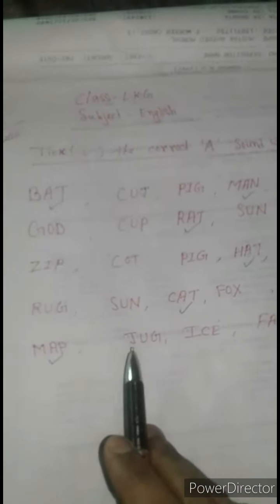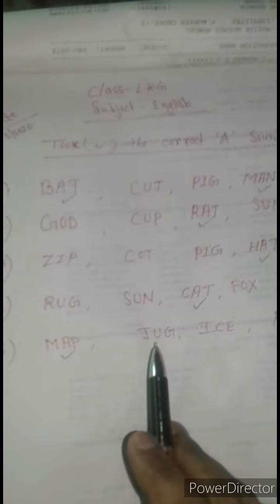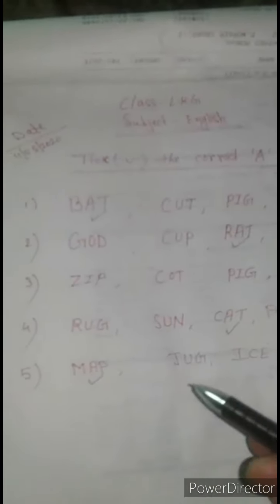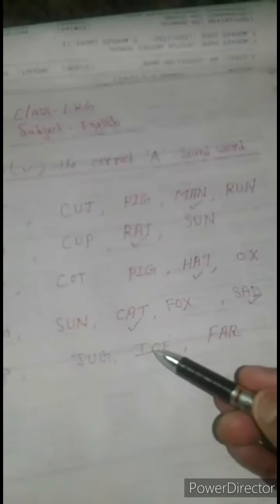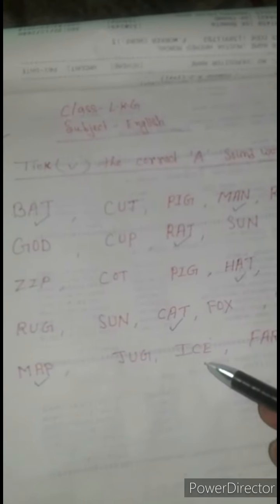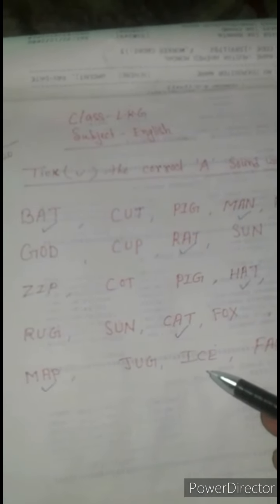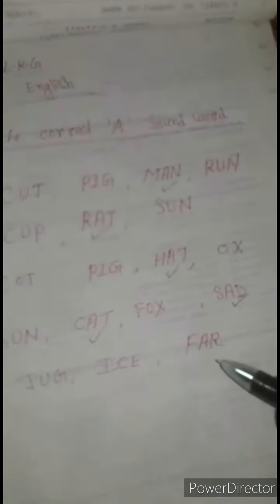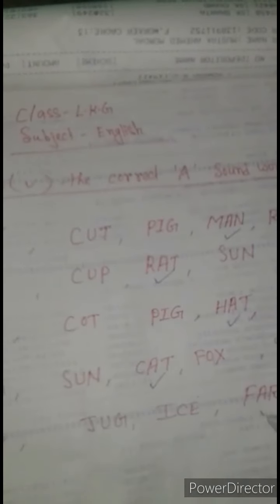J, U, G — Jug. Is Jug an A sound word? No, it is a U sound word. I, C, E — Ice. No, it is an I sound word. F, A, R — Far? Yes, A sound word. Tick the A sound word.